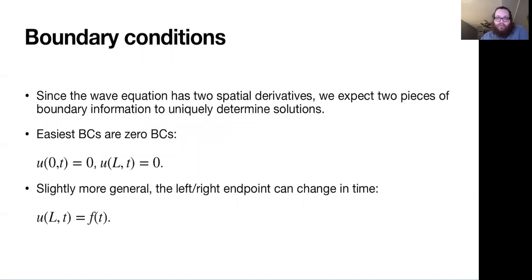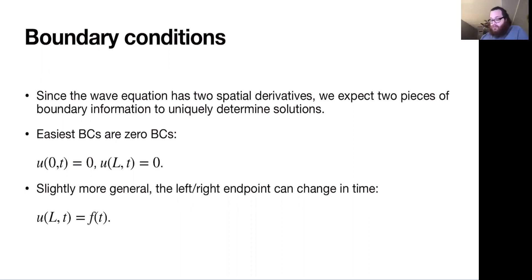The wave equation has two time derivatives, so we'd expect two initial conditions for the time behavior. But we also have two spatial derivatives, and so as in the heat equation, we expect two pieces of boundary information or two boundary conditions to uniquely determine a solution.